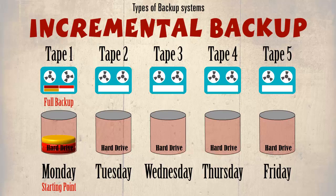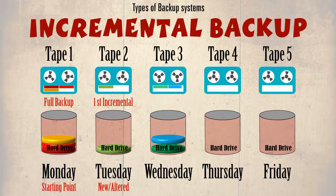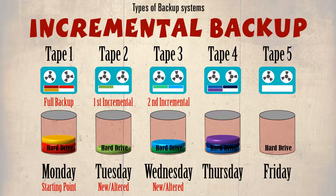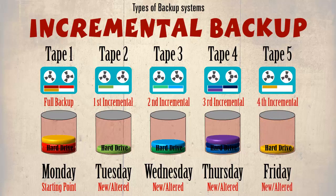Tuesday's backup will only include those files not included in the full backup that was run on Monday — these are the new or altered files. This is called the first incremental backup. Wednesday's backup will only be the files that were created or altered on that day, which are not included in the full backup or the backup on Tuesday. This is called the second incremental backup, and so on through the week. We can clearly see that the backup times will be short, as the backups are only capturing new and changed files since the last backup.